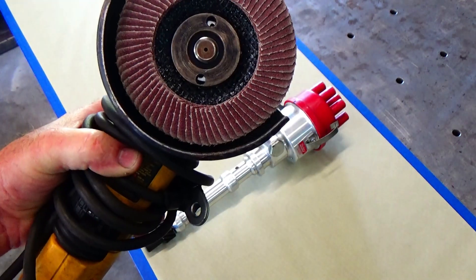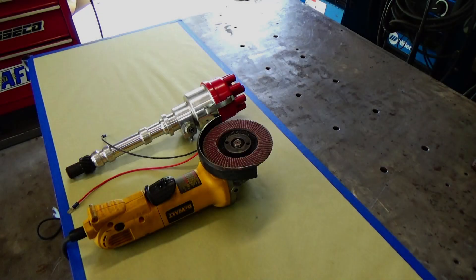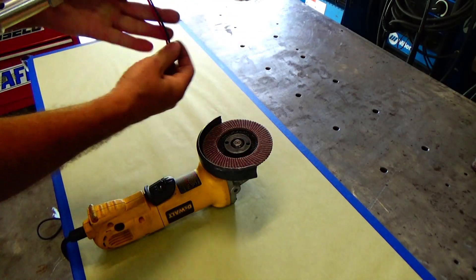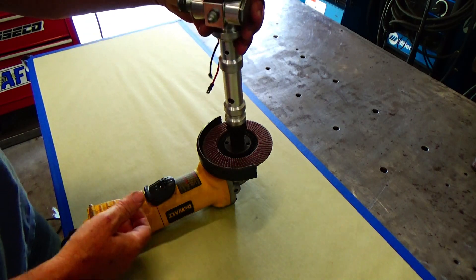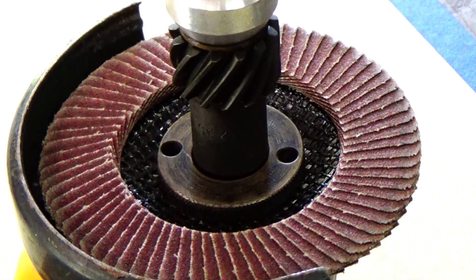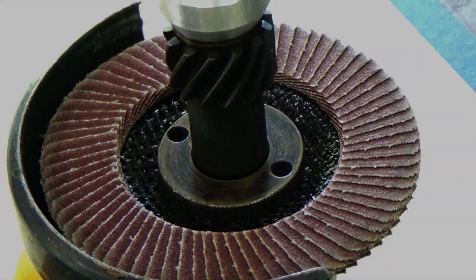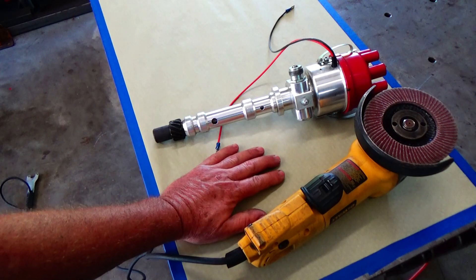So one thing I have in the shop that spins pretty good is one of those side grinders. I'm not sure of the RPMs of them, but I know they spin pretty fast. And you've got to figure that distributor is spinning half the speed that your crankshaft is. So if we can figure out a way to mount that distributor where that side grinder will spin it, we could do some pretty neat tests.